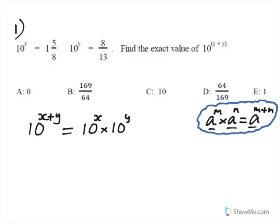Remember, the base has to be the same. All I have to do now is substitute 1 and 5 eighths for 10 to the power of x, and 8 thirteenths for 10 to the power of y. To multiply these two fractions, we need to change the first one, the mixed number, to an improper fraction or a top-heavy fraction. One unit is how many eighths? It's 8 eighths. There are five more eighths to consider, so that's a total of 13 eighths.